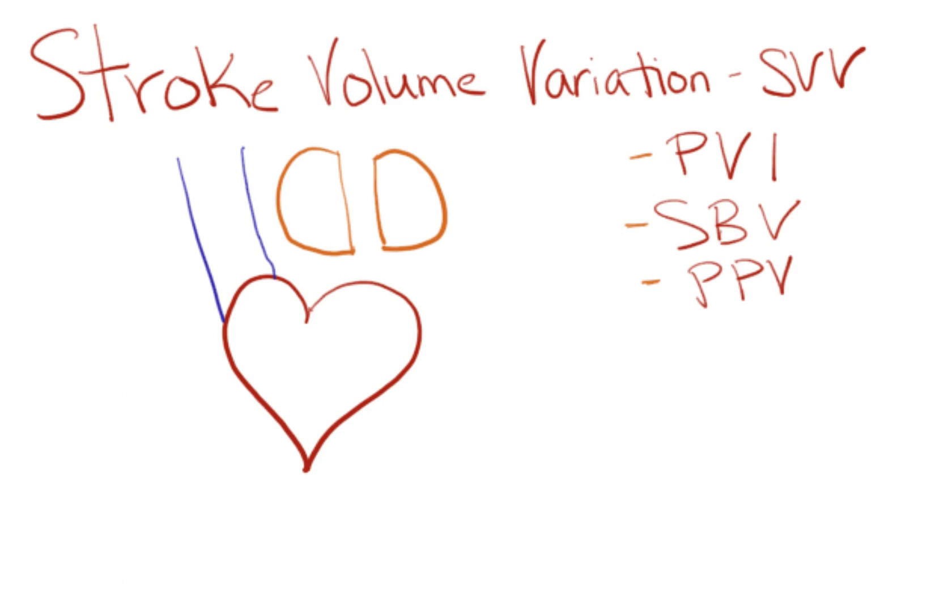So when we look at stroke volume variation, it's much more accurate in a patient who's vented and without arrhythmias. And we'll discuss why that's the case.